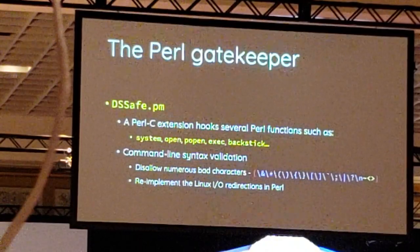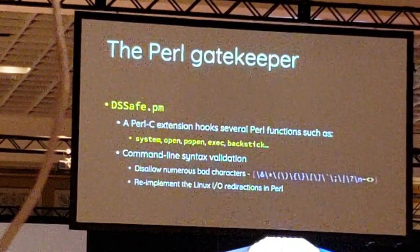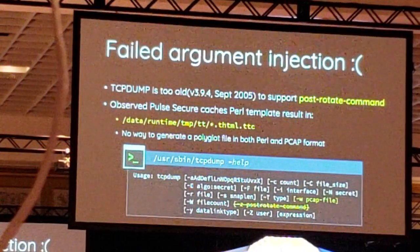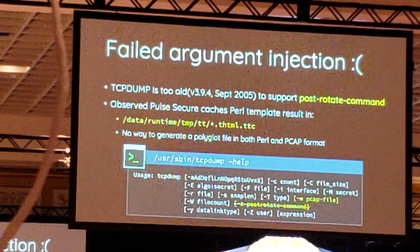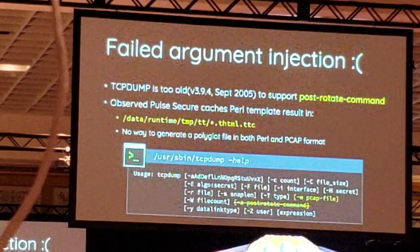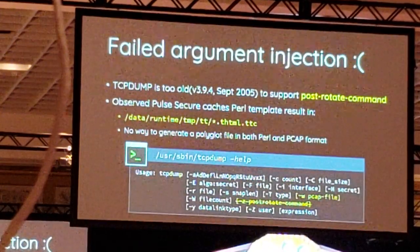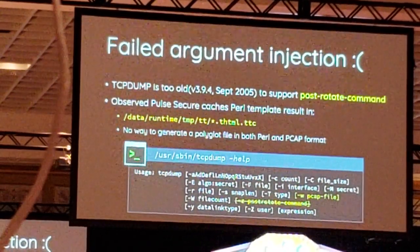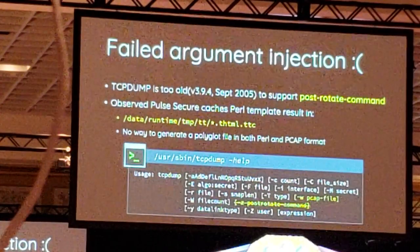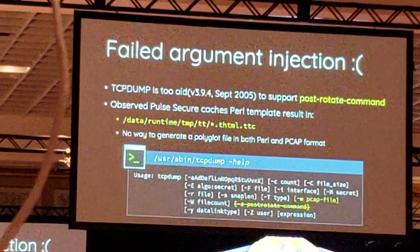So due to the hardening, we cannot perform any common injection. We tried several ways to bypass the hardening. Of course, the first attempt was argument injection. However, the Zip-based opener's Perl is too old, so it failed because it didn't support several useful features such as the post-tab command.